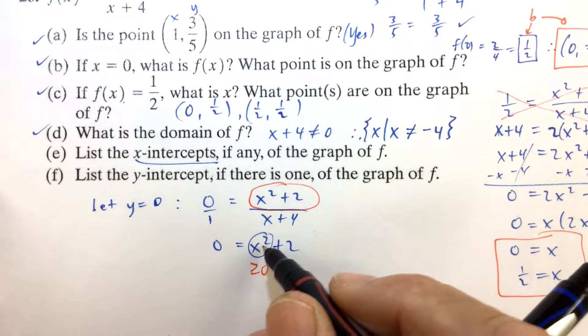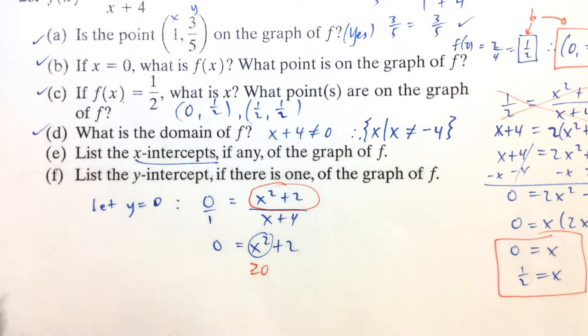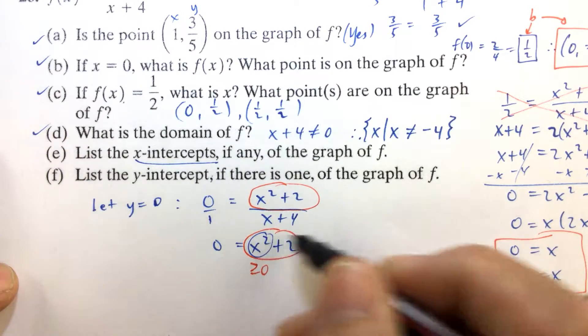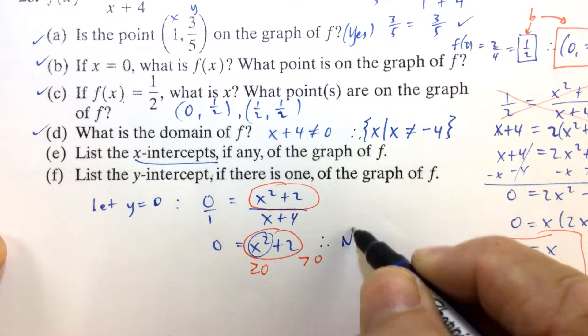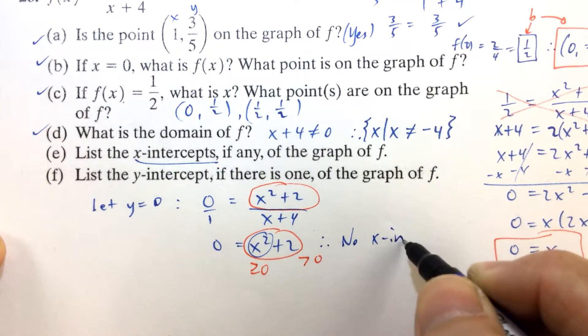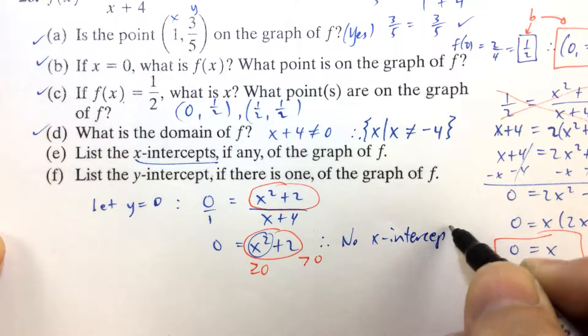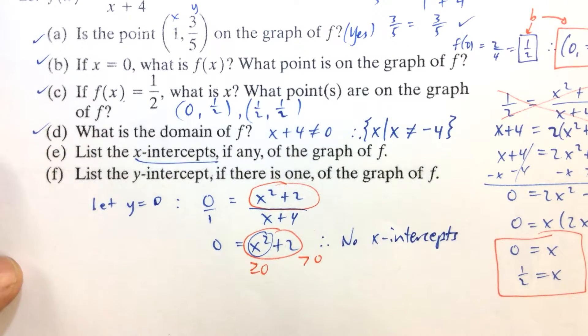But if you add a number 2 to a number bigger than or equal to 0, you're going to get a positive number. So, this whole thing has to be a positive number, which, therefore, we would have no X-intercepts. No X-intercepts because the function's value can never be equal to 0.